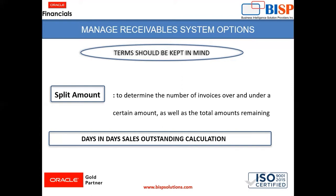After giving 400 as the split amount, you can review how much of your open receivables are comprised of amount 300 and how much correspond to your 500 business. That is the concept of split amount. Moving to another term: Days in Days Sales Outstanding Calculation. It is used by a company to estimate the size of their outstanding account receivable.